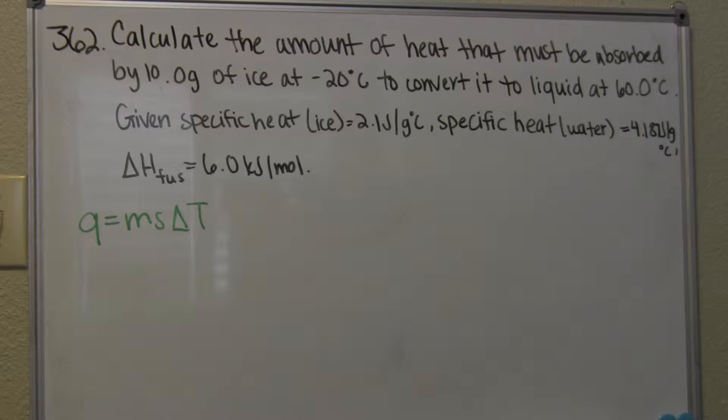This is number 362 on the problem set, and it states, calculate the amount of heat that must be absorbed by 10 grams of ice at negative 20 degrees Celsius to convert it to liquid at 60 degrees Celsius. Given specific heat of ice is 2.1 joules per gram Celsius, specific heat of water is 4.187 joules per gram Celsius, and the heat of fusion is equal to 6.0 kJ per mole.